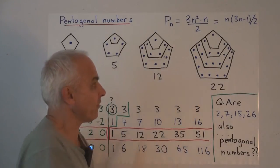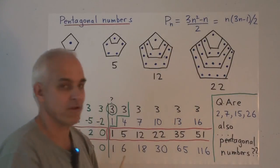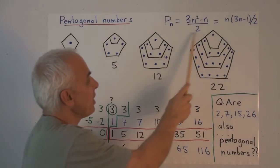1, 5, 12, 22. And it's a nice exercise to try to convince yourself that the formula for Pn is this thing here: n times 3n minus 1 divided by 2.